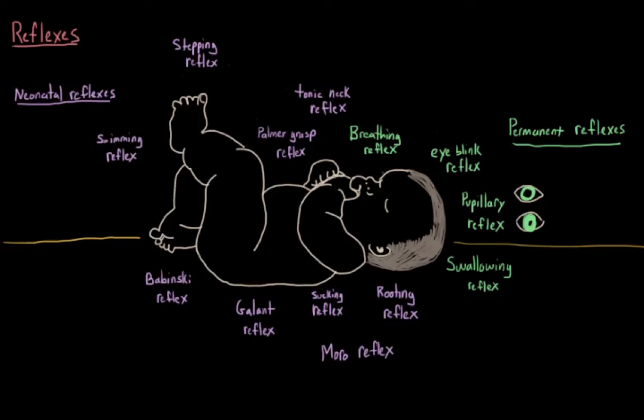So why do we have these reflexes? Some of them, like breathing and swallowing and the rooting reflex, are survival reflexes. They help us to live. But for other reflexes, it isn't exactly clear why they're there. One idea is that they're evolutionary holdovers. That things like the grasping reflex and the swimming reflex seem helpful if your ancestors were in situations where it was easy for them to be dropped. And things like the stepping reflex might be precursors to walking and crawling.